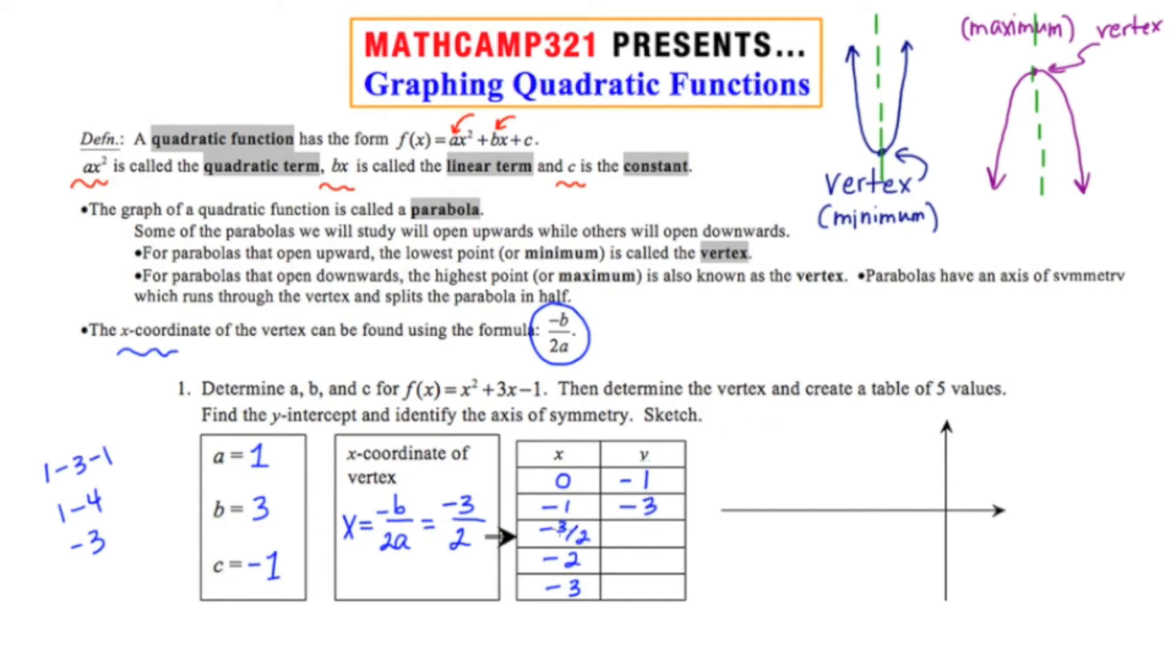I'll save the fraction for last. If I plug in negative 2, I get negative 2 squared or 4 minus 6 minus 1, or 4 minus 7, which is also negative 3. And then if I plug in negative 3, I'm going to have 9 minus 9 minus 1, or 0 minus 1, or negative 1.